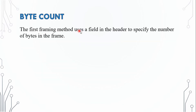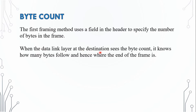Byte count: the first framing method uses a field in the header to specify the number of bytes in the frame. When the data link layer at the destination sees the byte count, it knows how many bytes follow and hence where the end of the frame is.